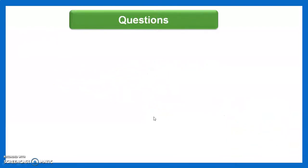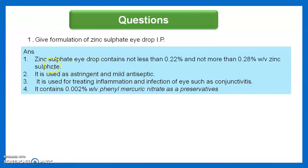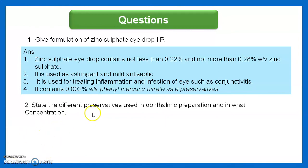The result: 10 ml of zinc sulfate eye drops IP is submitted in a well-closed container with a neat label. Q&A: zinc sulfate eye drop IP contains not less than 0.22% and not more than 0.28% zinc sulfate, used as an astringent and antiseptic for treating inflammation and infection such as conjunctivitis. It contains 0.002% phenyl mercuric nitrate as a preservative.